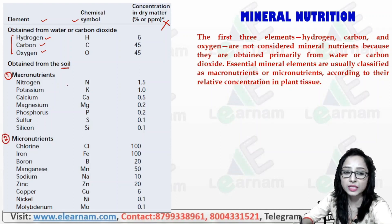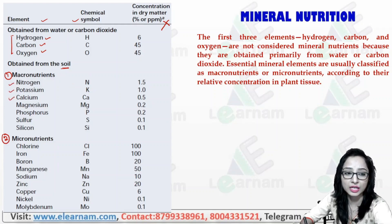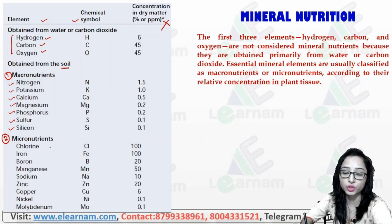From the soil, the macronutrients include nitrogen, potassium, calcium, magnesium, phosphorus, sulfur and silicon. These are present in large quantities.